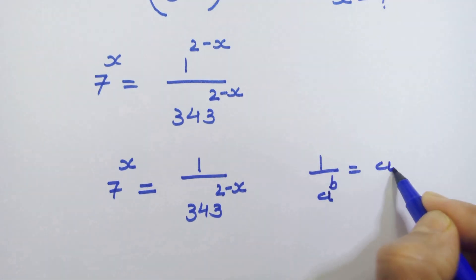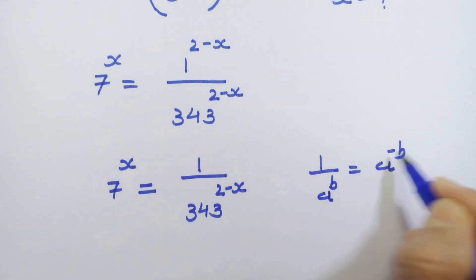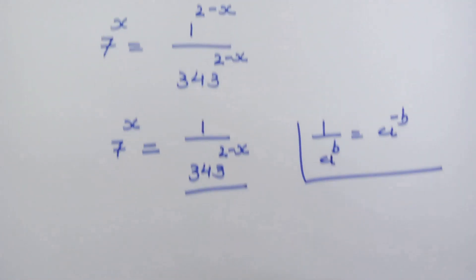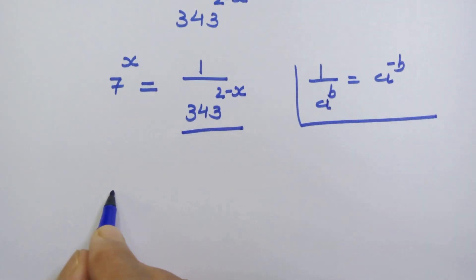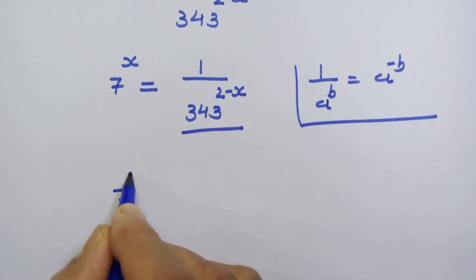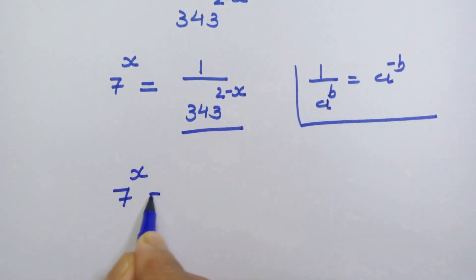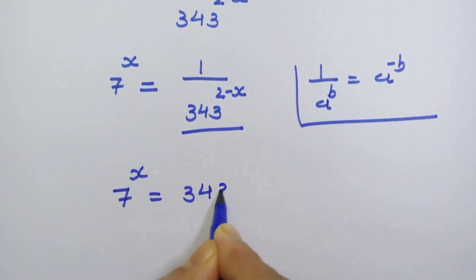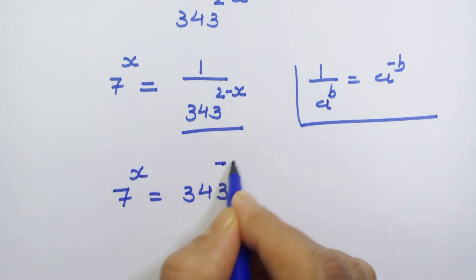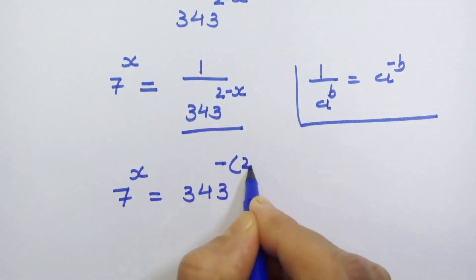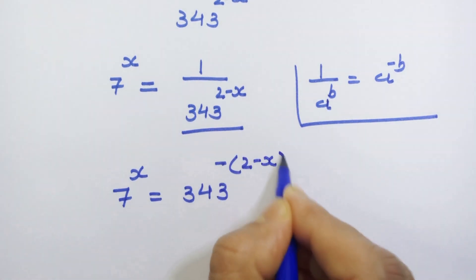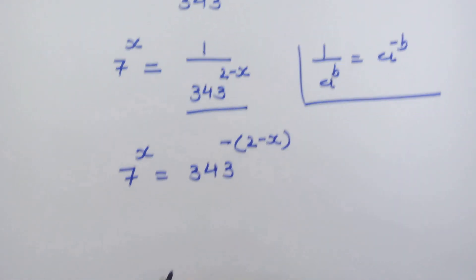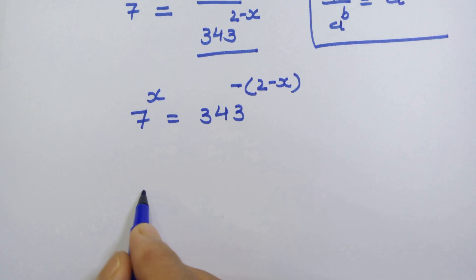As per the rule, if we have 1 upon a raised to b, then we can write it as a raised to minus b. Using this rule, we can write 7 raised to x is equal to 343 raised to minus (2 minus x).